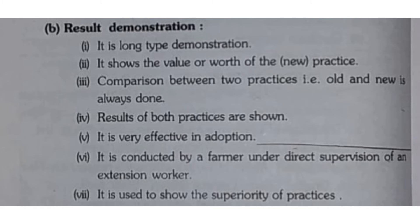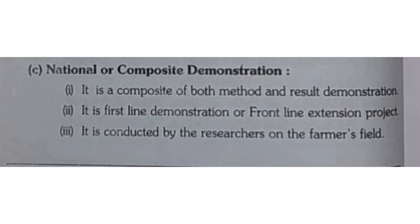The next is result demonstration, which is a long-term type. It shows the value and worth of the new practice and allows us to compare the old and new. The results of both practices — old and new — are shown. It is effectively adopted and it is conducted by a farmer under the direct supervision of an extension worker. It is used to show the superiority of the new practices, making it better than method demonstration.